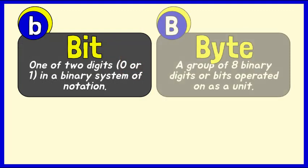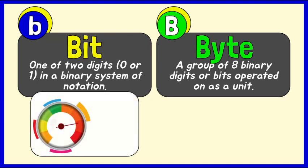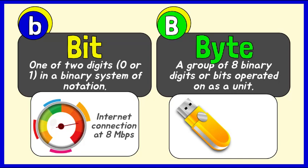A group of 8 bits is called a byte, and is usually abbreviated as an uppercase B. Transmission speeds are typically expressed in bits, whereas storage space is typically expressed in bytes. For example, an internet connection might transfer data at 8 megabits per second. In a flash drive specification, you can see storage capacity such as 32 gigabytes for documents, music, video, and other files.